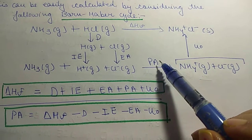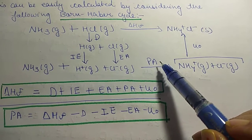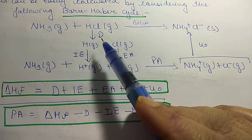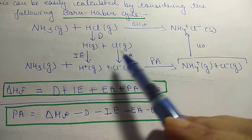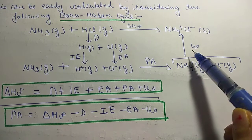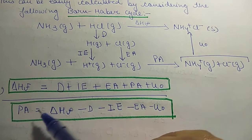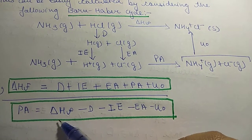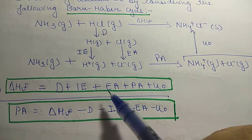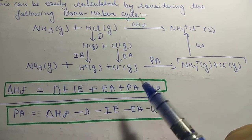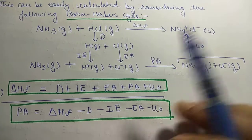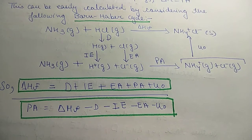From this Born-Haber cycle for NH₄Cl, ΔHf equals dissociation energy plus ionization energy plus electron affinity plus proton affinity plus U-naught. By rearranging this equation, proton affinity can be calculated. These are the applications of the Born-Haber cycle.